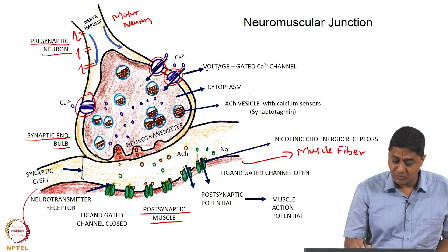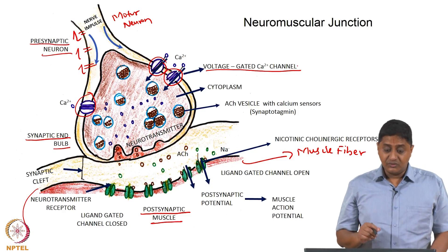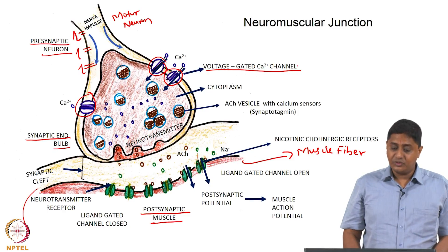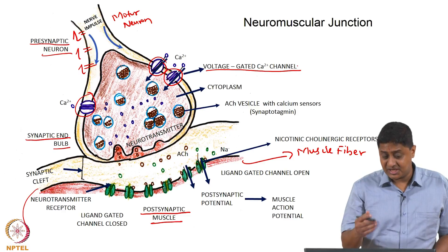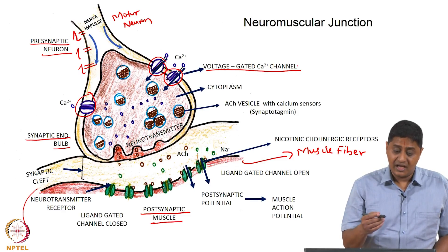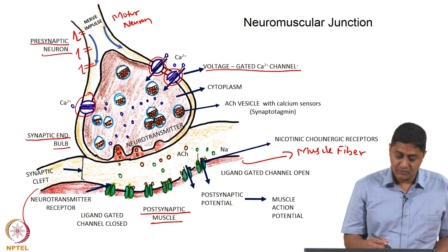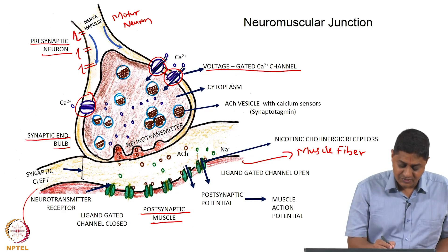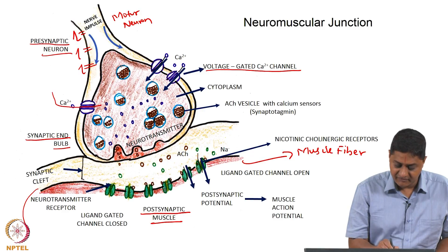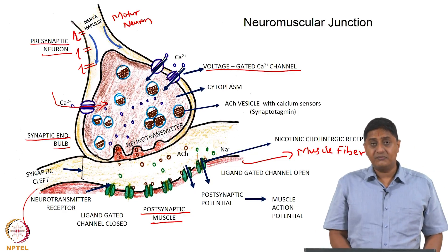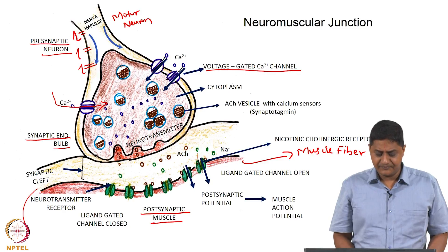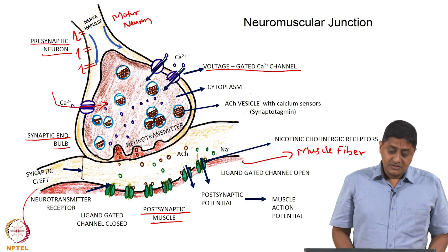These channels are voltage-gated calcium channels. These channels are opened whenever the potential is above a certain threshold. So when the action potential arrives at these points, these voltage-gated calcium channels open, and a lot of calcium enters inside the cell. The question is: what does this do to the presynaptic neuron?